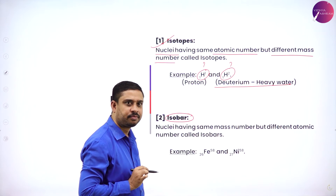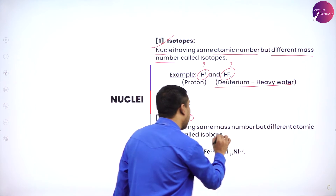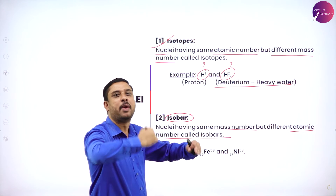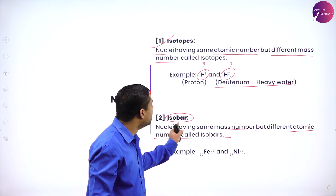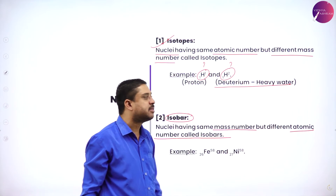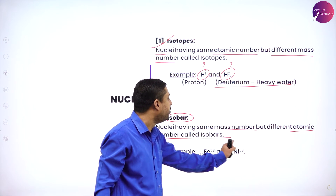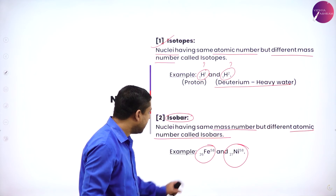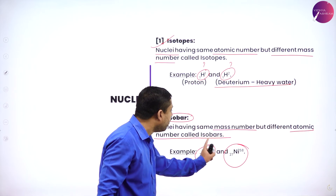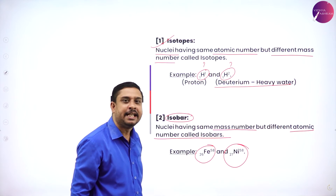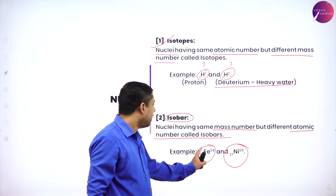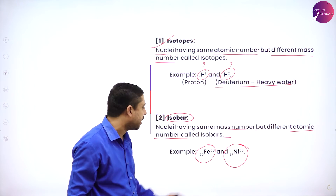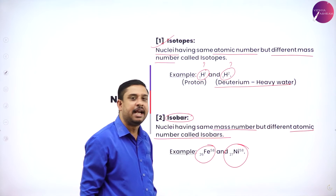Isobars — nuclei having the same mass number but different atomic number. This is the other way around from isotopes. For example, iron-58 and nickel-58: both have mass number 58, but iron has atomic number 26 and nickel has atomic number 27. So they have the same mass number but different atomic number — these are called isobars.